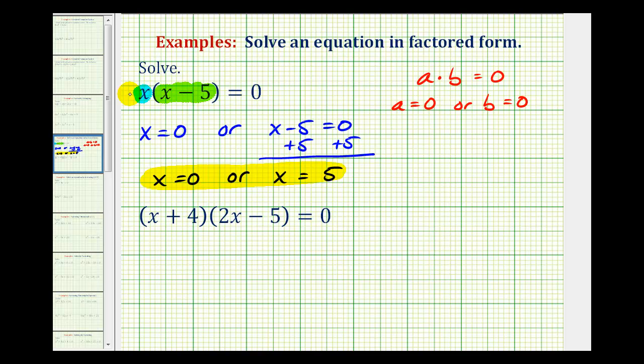Notice how when x equals zero the first factor is equal to zero, so the product would be zero. And if x equals positive five, the second factor would be zero, therefore the product is still equal to zero.